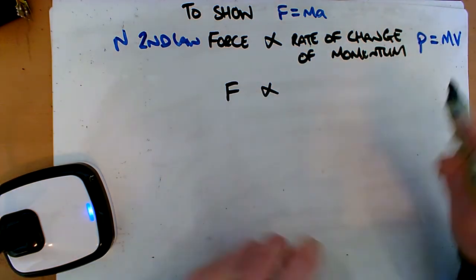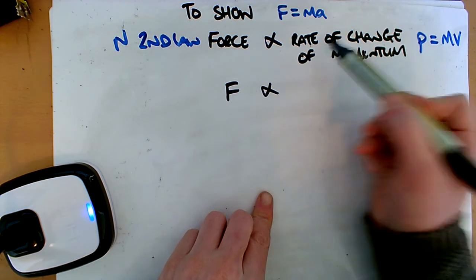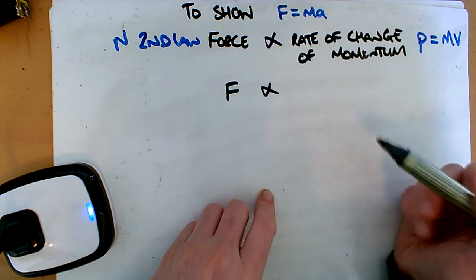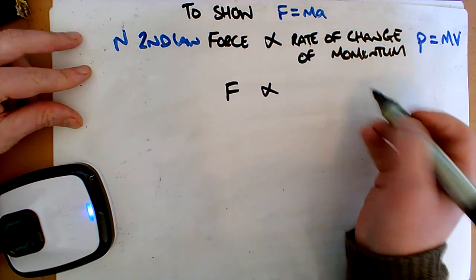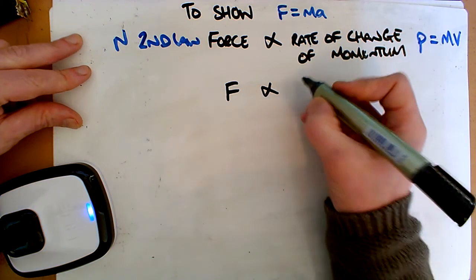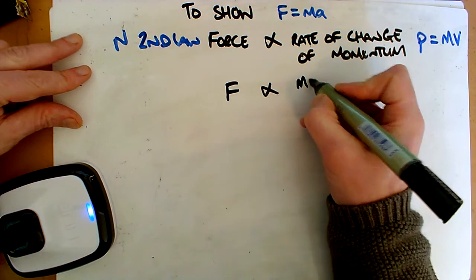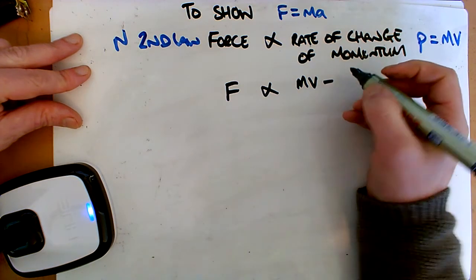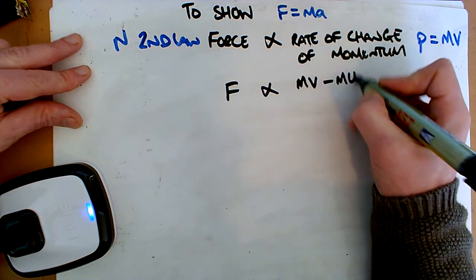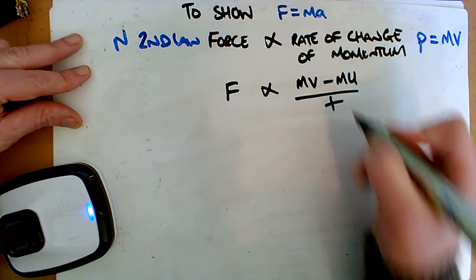So the change of momentum means it's the difference between the final and the initial divided by time. We have the final velocity, which is just going to be Mv, minus the initial velocity, which is just going to be Mu, all divided by time.